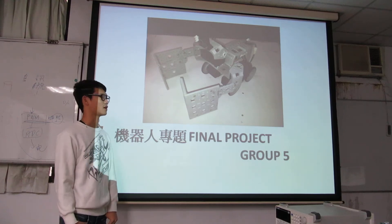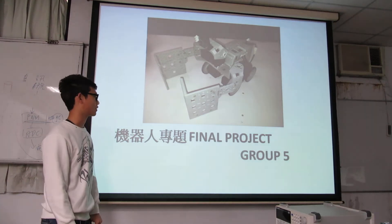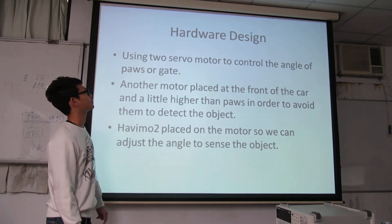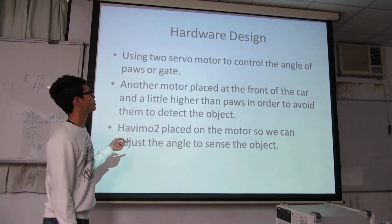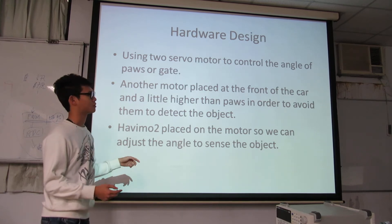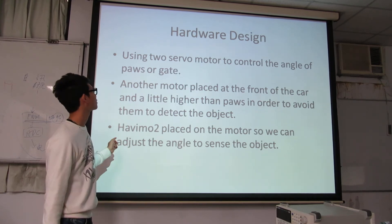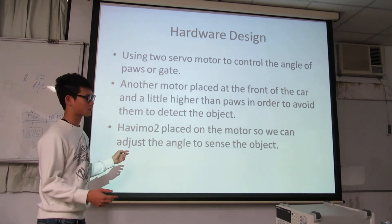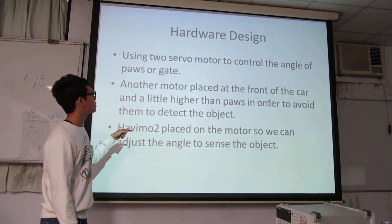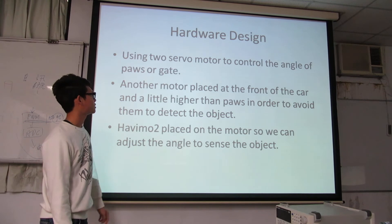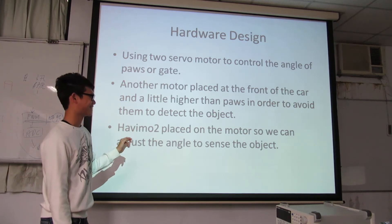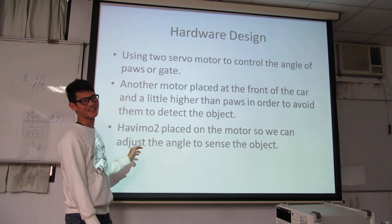We are in group 5. This is our final project. Firstly, our design uses two servo models to control two phones to grab the phone. Another model is designed at an angle to sense the phone.